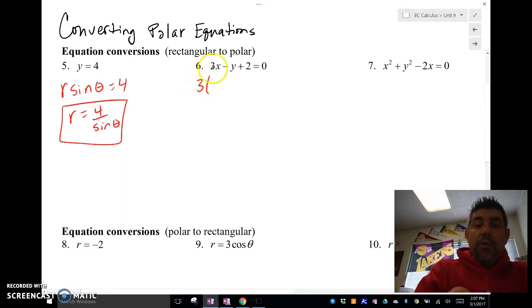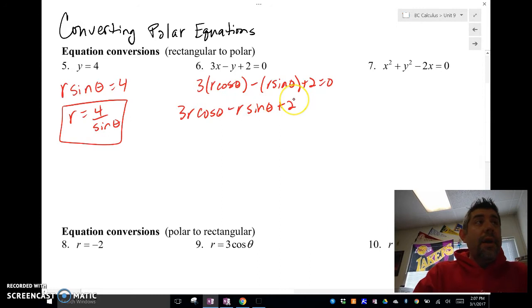Here we're going to also substitute x. We're going to have r cos(θ) - r sin(θ) + 2 = 0. We're going to throw those in there, and I'm going to factor out the r in each of these.